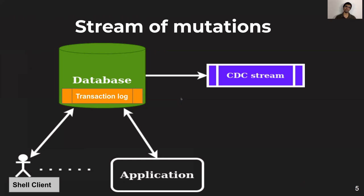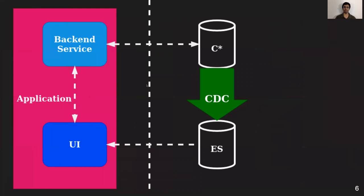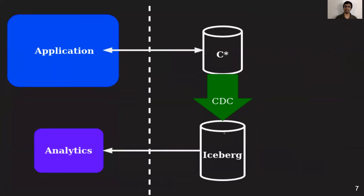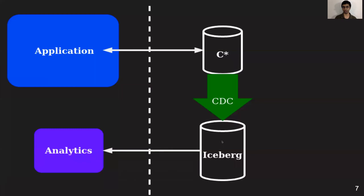Why would we need this? Let's take a look at the previous example. We have an application with a back-end service and a UI. The back-end service has business logic and maintains state in a robust database like Cassandra, but the UI needs a more flexible database like Elasticsearch to perform text search and have search indices based on different fields to support user requests. We can solve the data sync problem between these two databases using CDC. We also see another example where we need the data in Cassandra in an analytics-oriented data warehouse solution like Iceberg or Hive. By having a Change Data Capture stream from Cassandra written into the data warehouse solution, we simplify the problem.